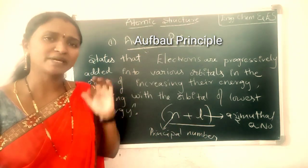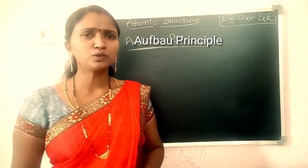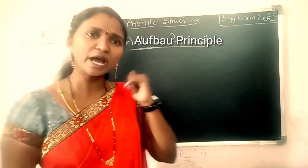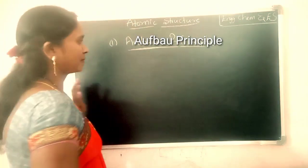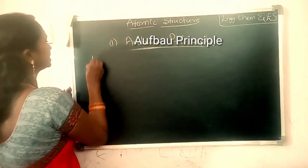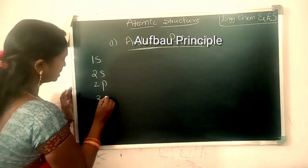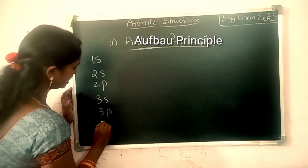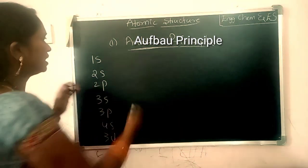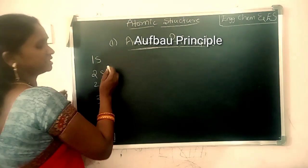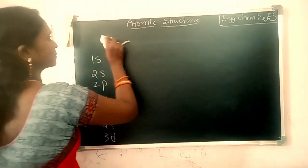Now let us see some examples of the Aufbau principle. Before going to the examples, we need to calculate the energies of some orbitals. Consider the orbitals 1s, 2s, 2p, 3s, 3p, 4s, 3d, etc. Let us calculate the n plus l value of each orbital.